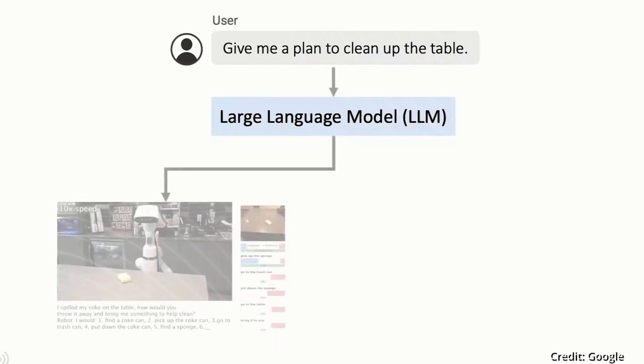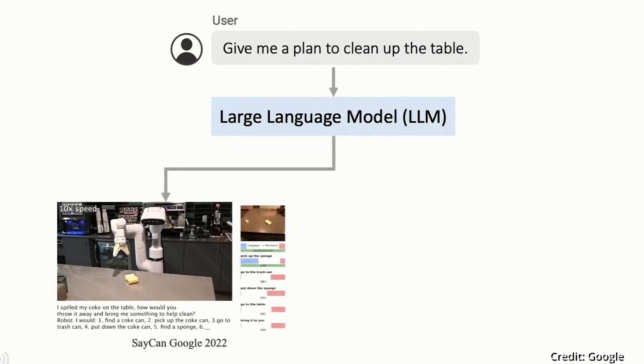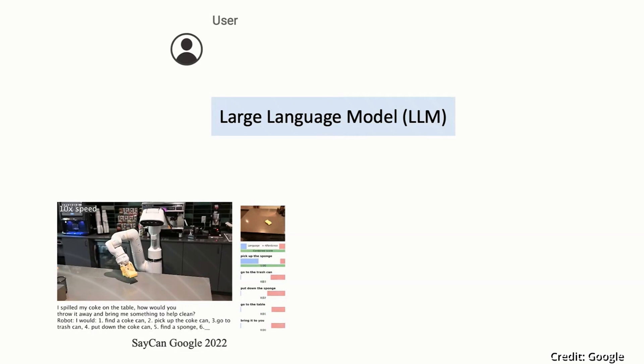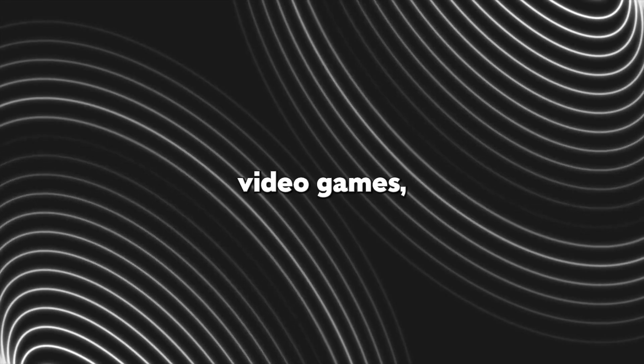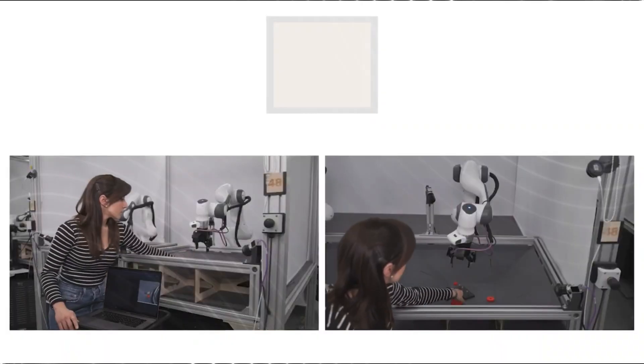Gato was capable of processing information in real life and in simulations, information like language, images, and actions. Gato is capable of playing video games, chatting, stacking blocks with a real robot arm, and even captioning images.